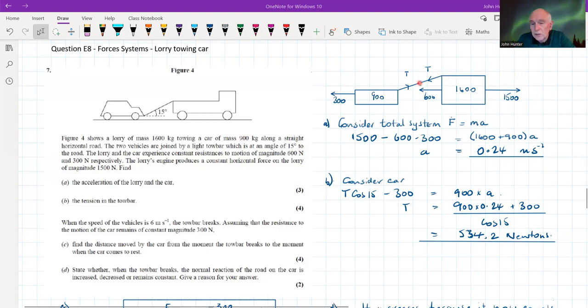As with tensions, they act in opposite directions at the same time. If it's a light tow bar and it's inextensible, then we'll find that the force is the same in both directions. We've drawn that, so that's good.